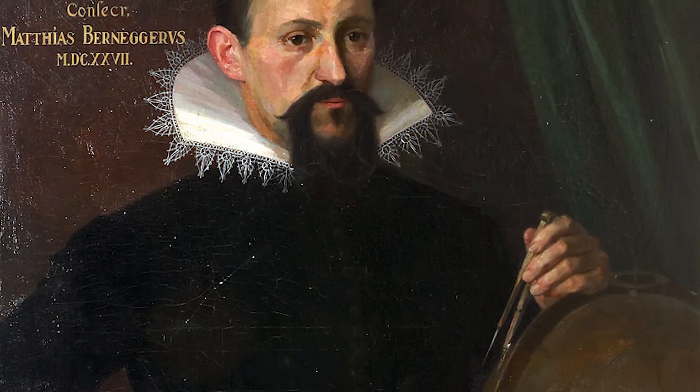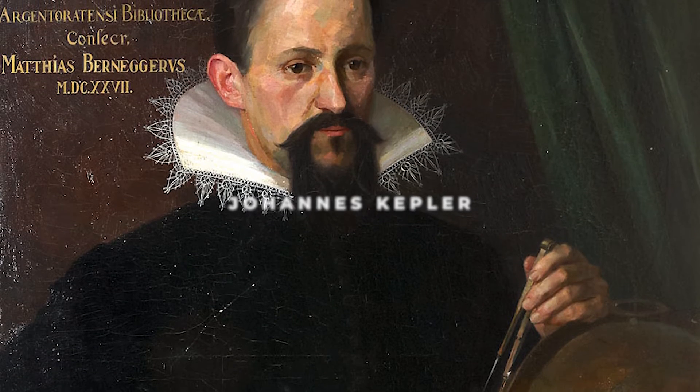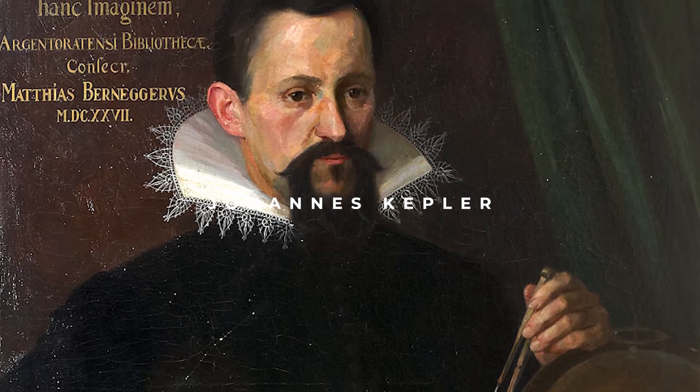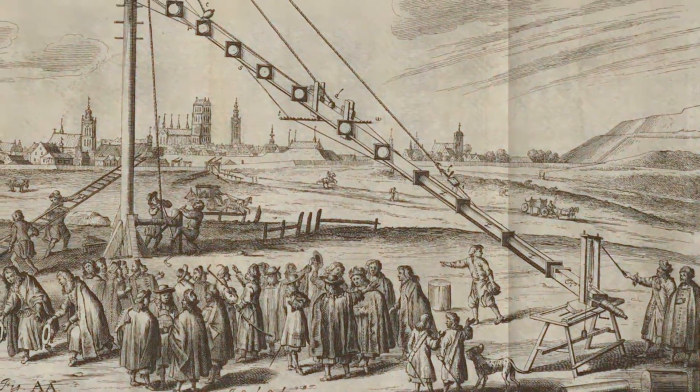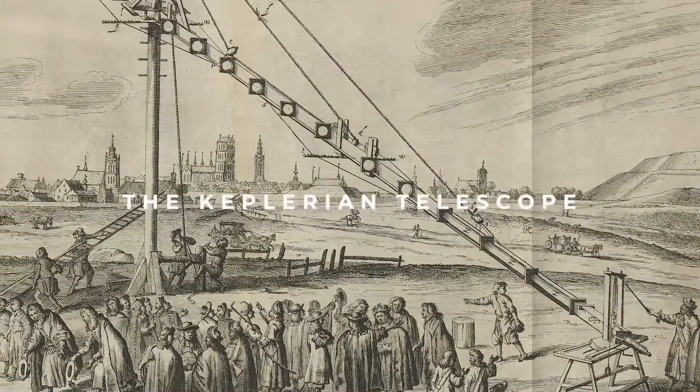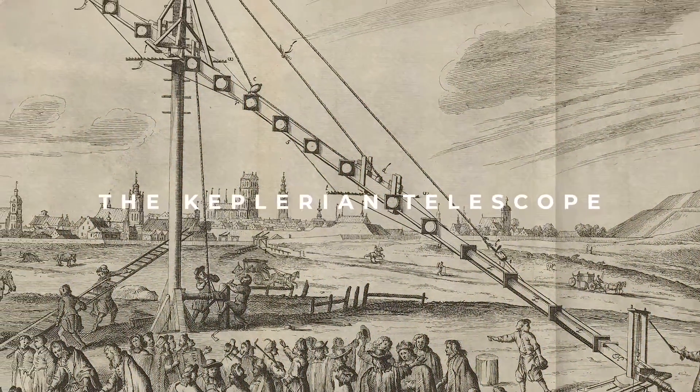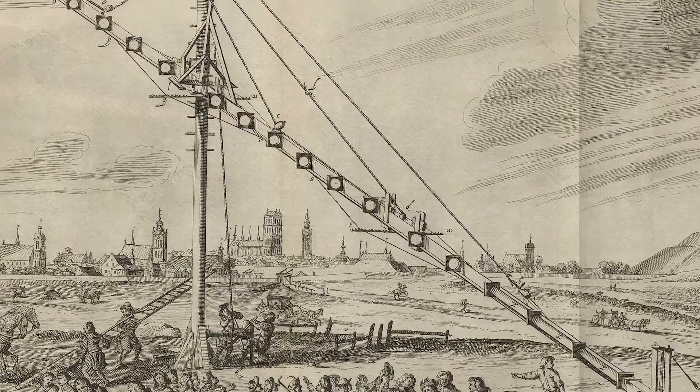A variation of the telescope was then proposed by Johannes Kepler, which was eventually accepted and improved upon in the 17th century. The design, called the Keplerian Telescope, consists of two convex lenses and produces an upside-down image.